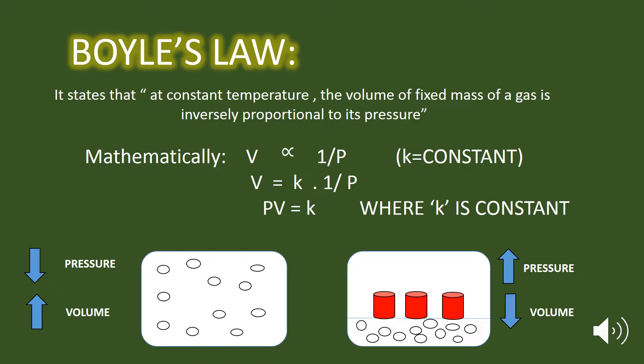Simply, we can say that if we increase the pressure, then the volume of a gas goes down. And if we decrease the pressure, the volume of a gas goes up. Remember that the temperature and the mass of a gas must be kept constant.